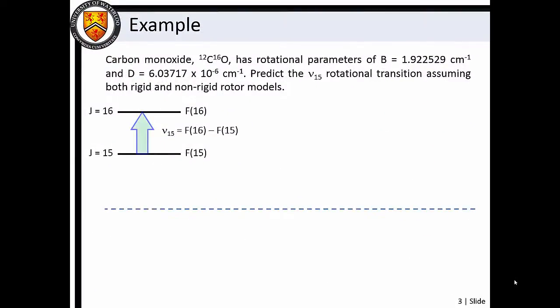Let's consider carbon monoxide, which has a rotational constant of B = 1.922529 cm⁻¹ and centrifugal distortion constant of D = 6.03717 × 10⁻⁶ cm⁻¹ for its ground electronic state.